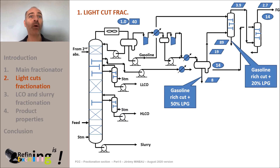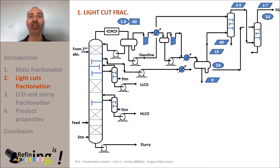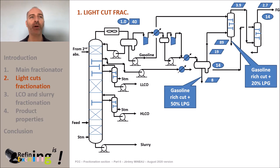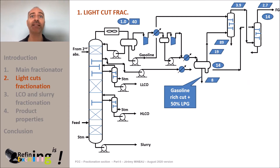It's now time to speak more in detail about the future of these two streams rich in LPG plus gasoline. We have 89 tons per hour of a mixture of LPG plus gasoline leaving the primary absorber bottoms, and 8 tons per hour after the second compression stage. The first stream contains about 20 weight percent LPG and the second stream about 50 weight percent.